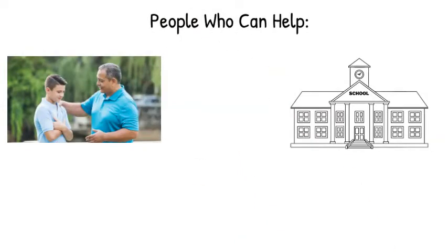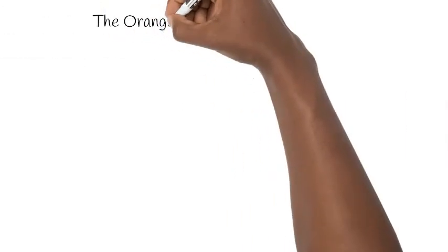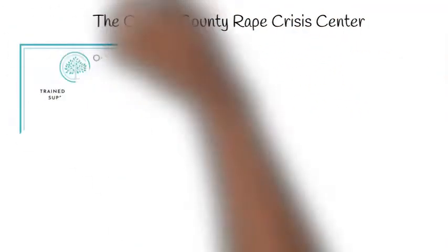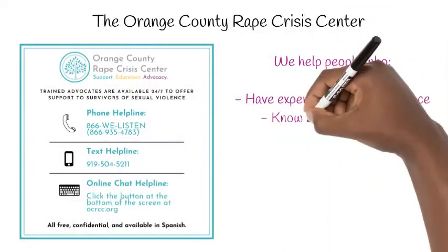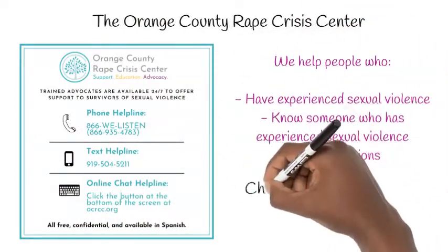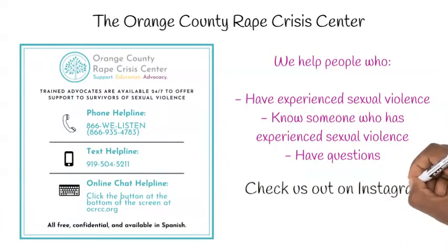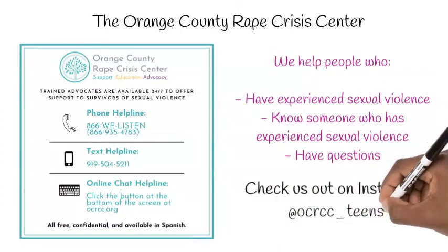You can talk to your parents, you can talk to your school staff, or you can talk to us, the Orange County Rape Crisis Center. You can call us at 866-935-4783, or text us at 919-504-5211. You can also chat with us if you go to our website, ocrcc.org.